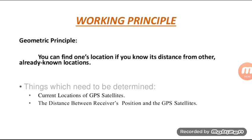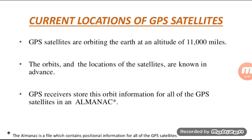The working principle begins with the Geometric Principle: you can find one's location if you know its distance from other already known locations. The two things that need to be determined are the current locations of GPS satellites and the distance between the receiver's position and the GPS satellites.